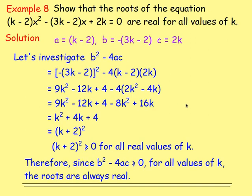Example 8: show that the roots of the equation are real for all values of k. Write down a, b, and c and investigate b² - 4ac. Be careful with negatives when multiplying out — you end up with k² + 4k + 4. Factorising gives (k + 2)². Since squaring always gives zero or above, (k + 2)² is always greater than or equal to zero, meaning the discriminant is always ≥ 0, so the roots are always real.